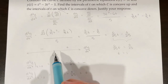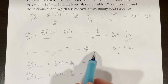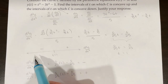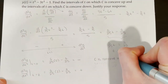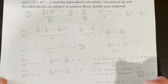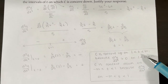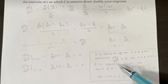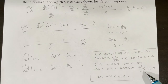C is concave up on the open interval from 1 to infinity because the second derivative of y with respect to x is greater than zero there. C is concave down on the interval from negative infinity to 1 because the second derivative of y with respect to x is less than zero on that interval.